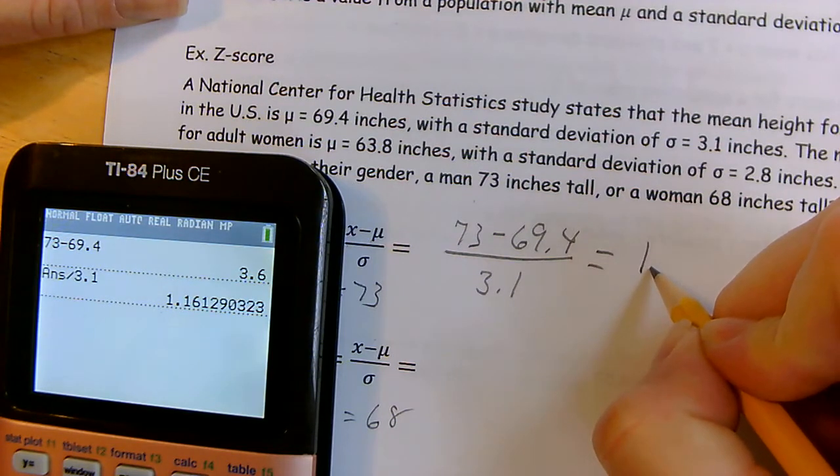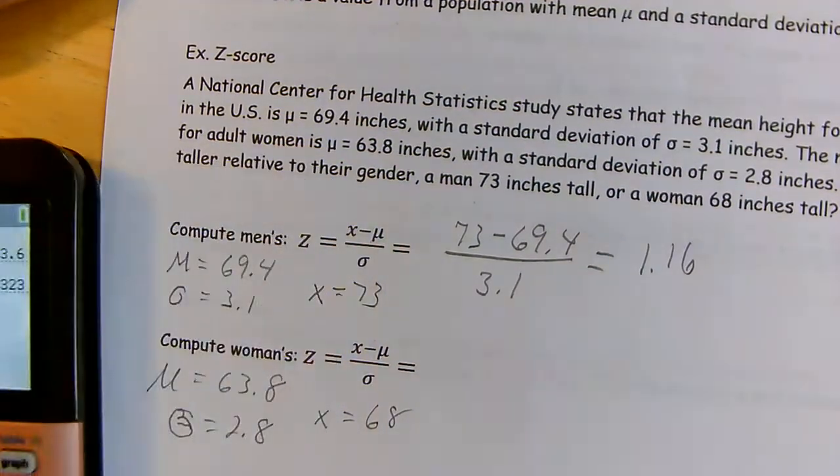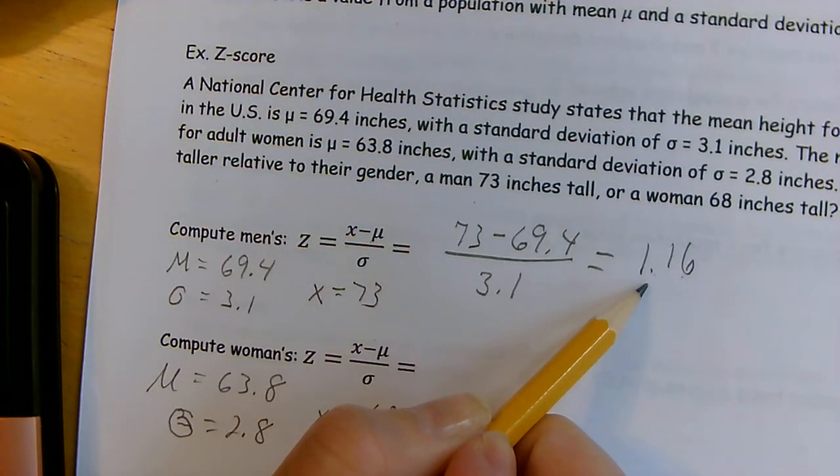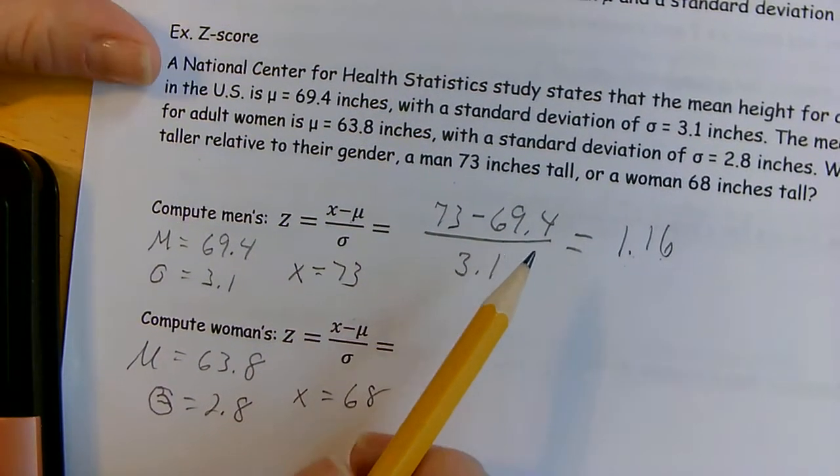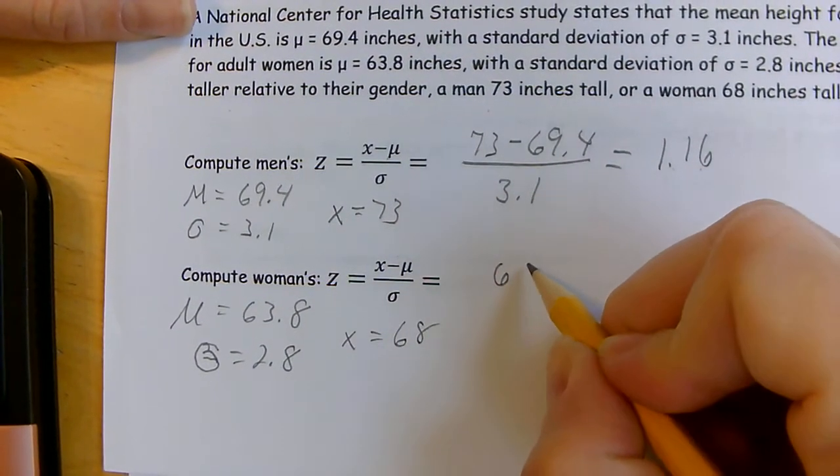Rounding to two decimal places, a man who's 73 inches tall is 1.16 standard deviations above average for that data set.